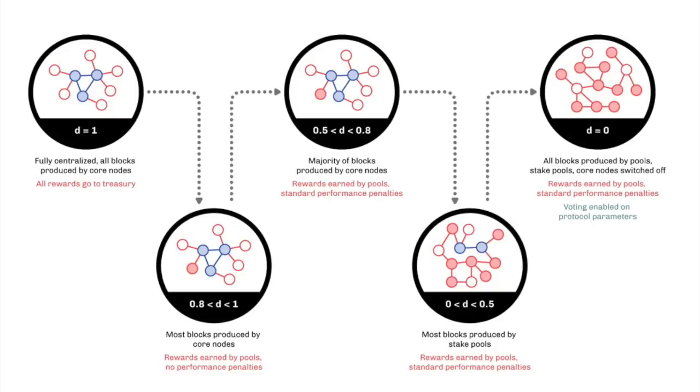When D drops below 0.5, stake pools will produce the majority of blocks. The network will have reached a tipping point where decentralization is inevitable. Before taking this dramatic step, we will ensure that two critical features are in place, peer-to-peer pool discovery and protocol changes to enable community voting. This will enable us to make the final push to full and true decentralization. The recently announced Project Catalyst program was the first step in this concurrent journey to full on-chain governance.